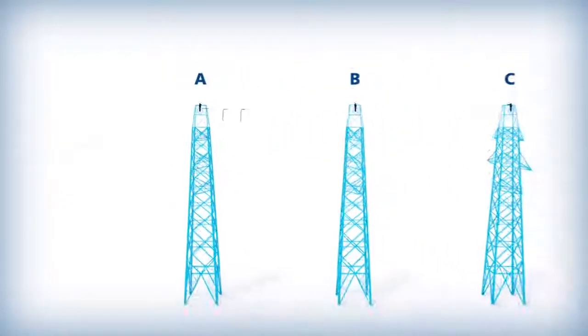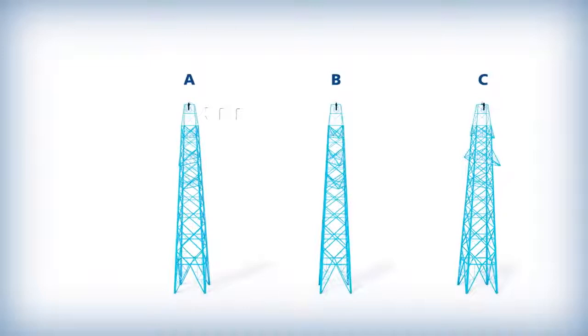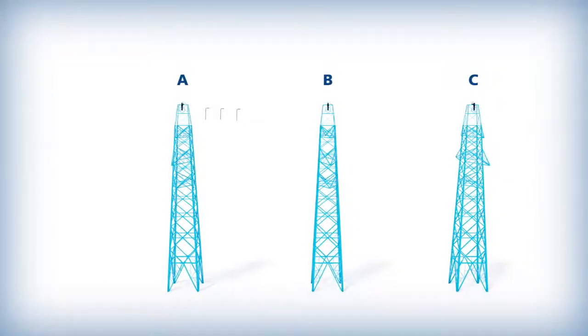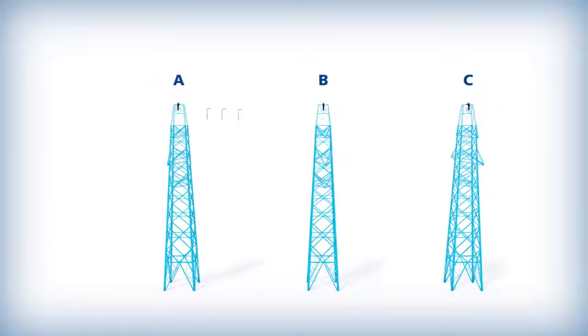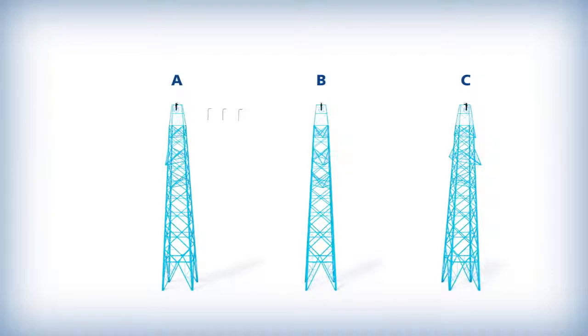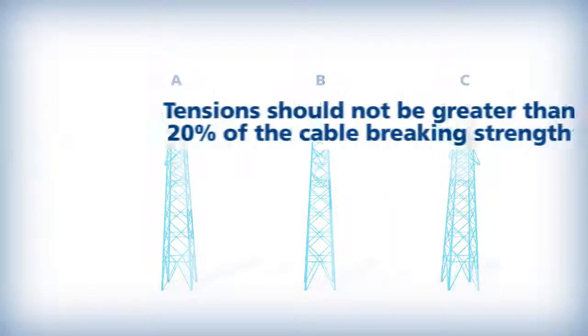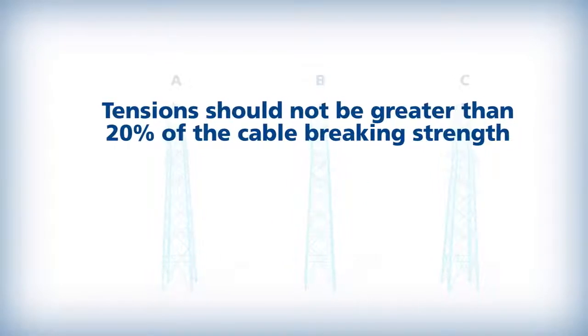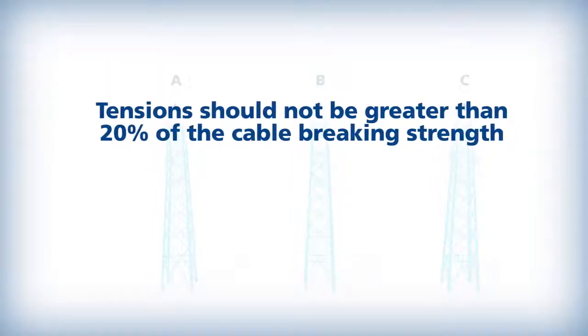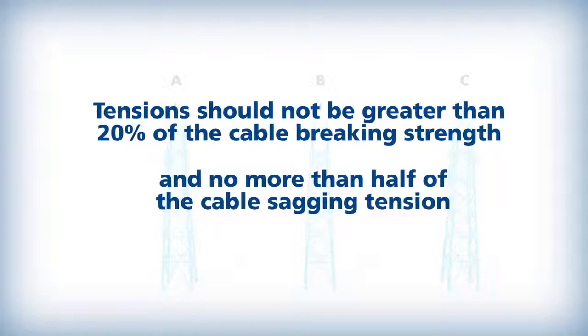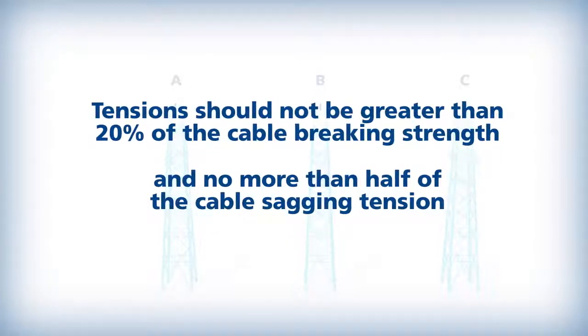The OPGW should be installed with a constant tension in order to keep the line clear of the ground or any obstacles while avoiding too much tension, as this could cause damage to the fiber units. Stringing tension should not be greater than 20% of the rated breaking strength of the cable and no more than half of the sagging tension of the cable.